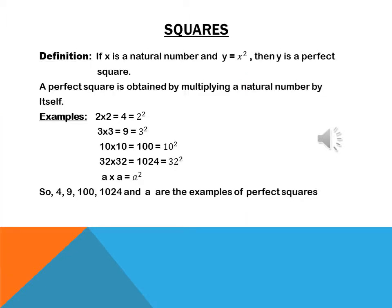Let's start with the definition of squares. In this topic, we will study how we can find the squares of natural numbers. If we are given a natural number and we need to find the square of that number, we multiply this number by itself to get the square. Some examples are given here.